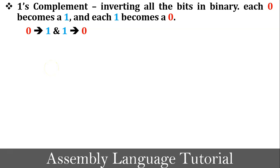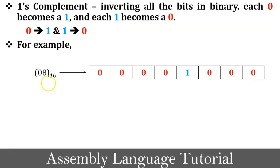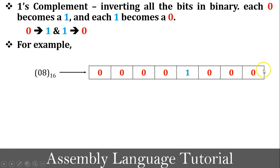Let's take one example to understand one's complement. The value 08 is in hexadecimal format. Now convert this value into binary format. The binary representation of 08 is four zeros, then 1, then three zeros — represented in 8 bits of binary digits.